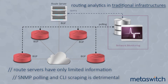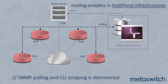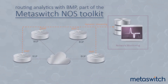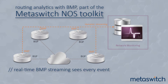This level of data has typically been obtained through regular polling using SNMP or CLI scraping, which is hugely detrimental to a router's performance. The BGP Monitoring Protocol, BMP, overcomes these limitations by dynamically streaming every significant BGP event.